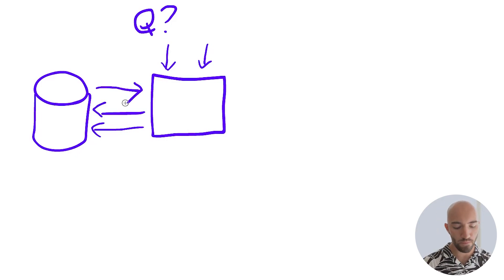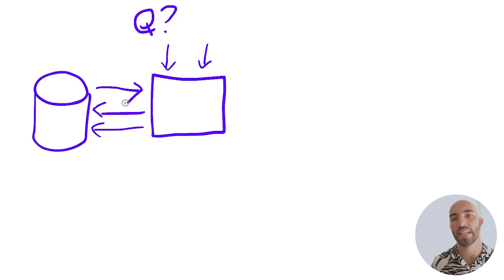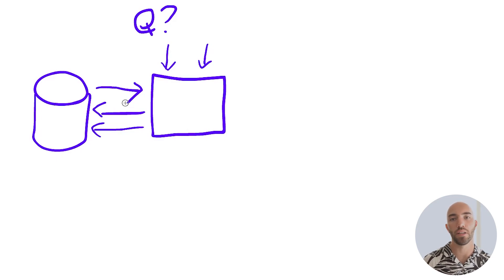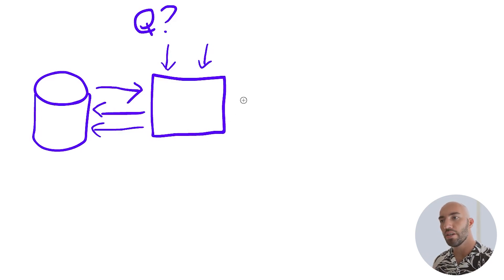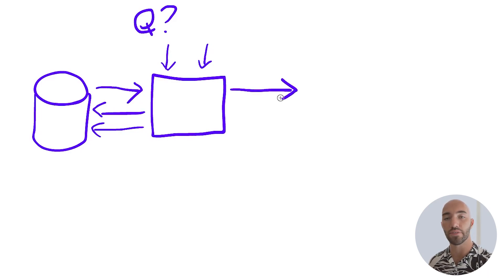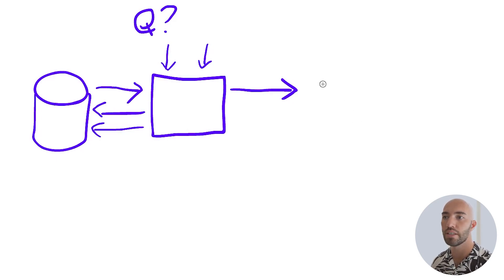Then we have, let's say, 10 of the most similar contexts returned — these are paragraphs of text. We can take those paragraphs and feed them into a reader model, which is the focus of this video.